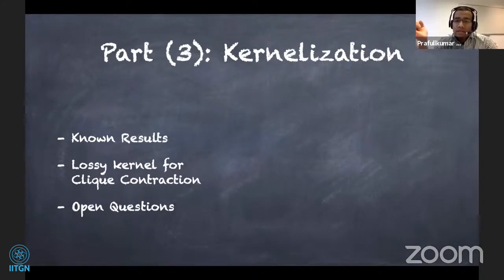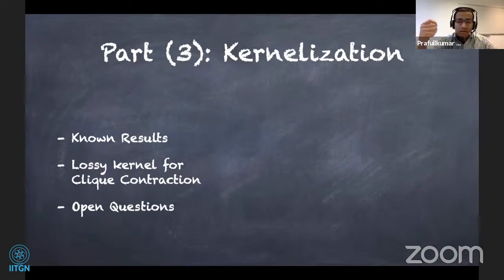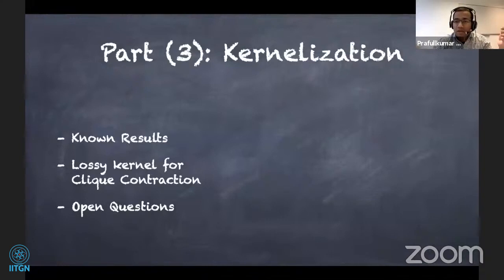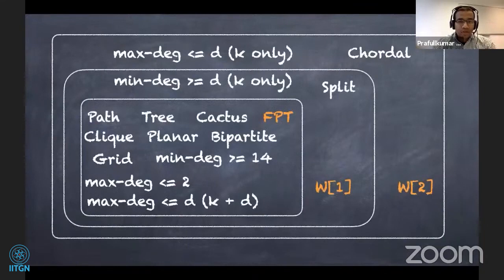Then I'll conclude with some open questions, and in the fourth part we'll look at exact algorithms regarding edge contraction. It's worth noting that this lossy kernel for clique contraction can be thought of as a continuation of what was done previously — establishing lossy kernels for a few problems — and we'll do the same here. I'll quickly revise the terminology, but this should be self-contained.